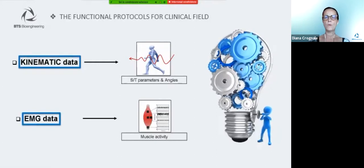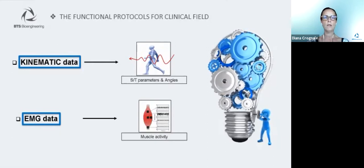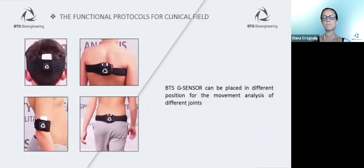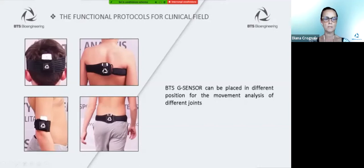Thanks to the functional protocols, we can assess the motor behaviour of the patient through the kinematic and EMG approach. About kinematics, the technology that supports kinematic analysis is the BTS G-sensor, which allows a rapid and objective evaluation of spatial and temporal parameters and joint angles. Based on the specific motor task to be studied, the G-sensor can be placed on any body segment — for example, on the head for cervical spine mobility analysis, on the trunk for trunk movements, on the humerus for shoulder movement analysis, or on the pelvis for walking, running, jumping, and so on.